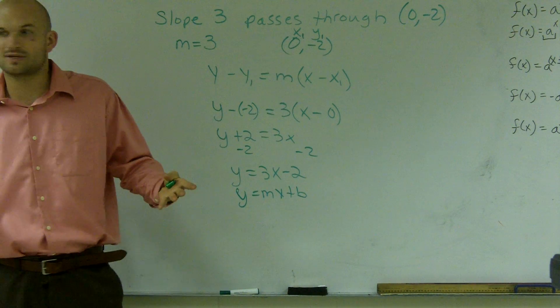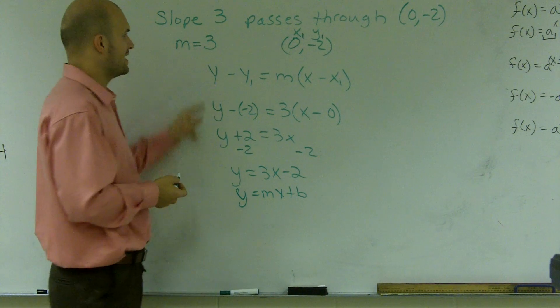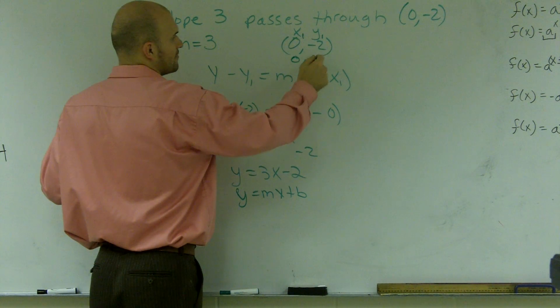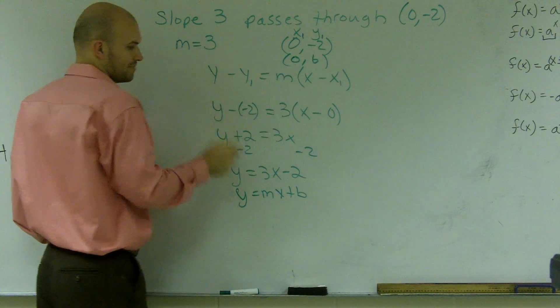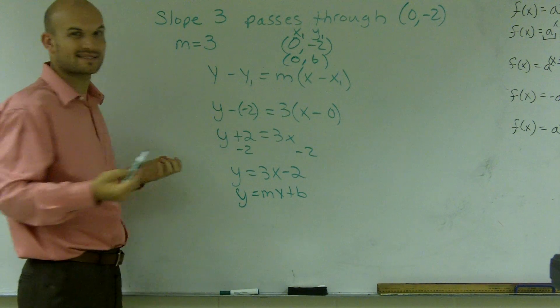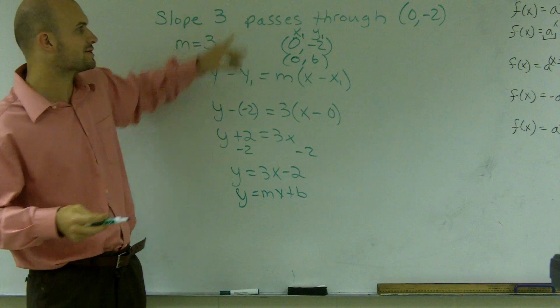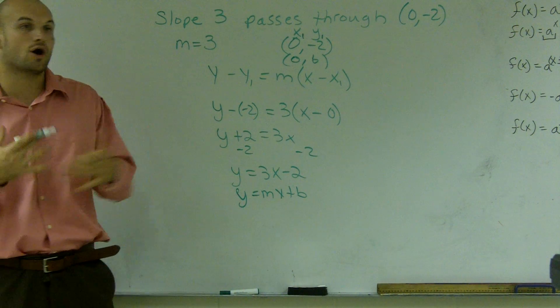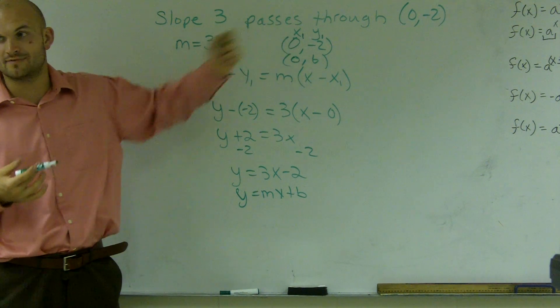So really, you could have done this problem very easily and actually said, oh, I know what m is, and I know that my intercept is always at 0b, so I could have just plugged in the negative 2 in for there and got the exact same answer. A little shortcut, but I wanted to make sure I could show you guys exactly how to solve the problem, because you need to be able to do this for all types of problems, even when you're not given the y-intercept.